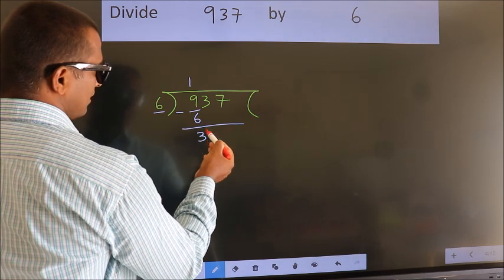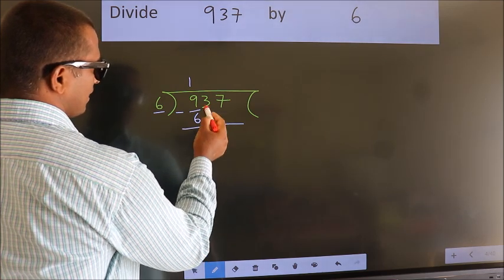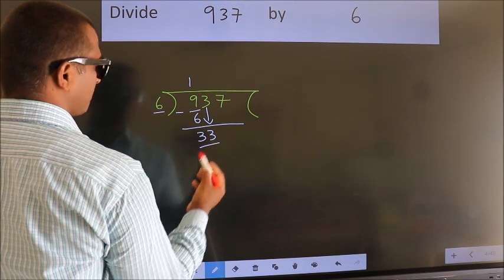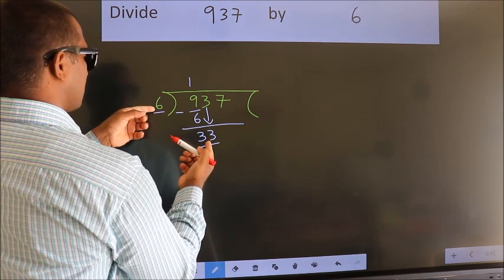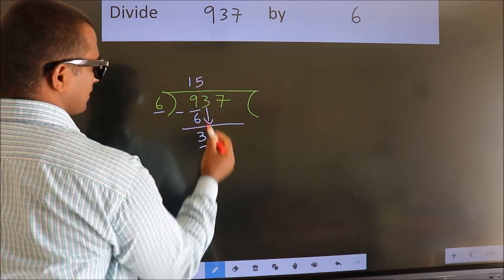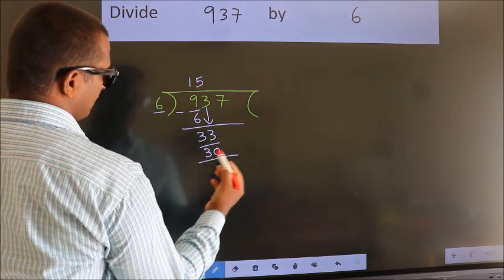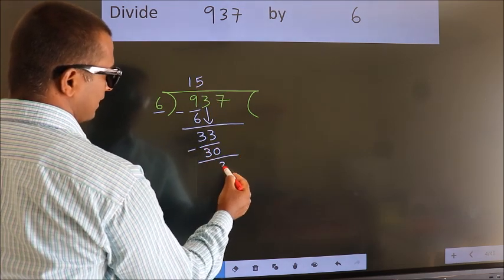After this, bring down the beside number. So, 3 down. So, 33. A number close to 33 in 6 table is 6 times 5 is 30. Now we subtract. We get 3.